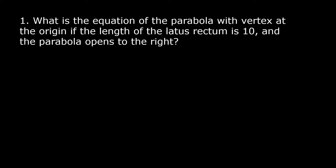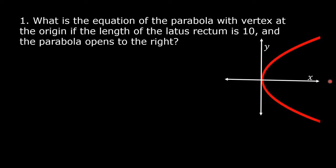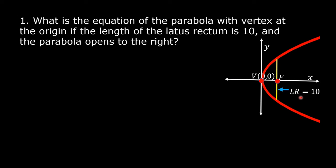Example number 1: What is the equation of the parabola with vertex at the origin if the length of the Latus Rectum is 10 and the parabola opens to the right? Let us say this is the y-axis and this is the x-axis. This is the parabola that opens to the right. The vertex is at the origin with coordinates (0, 0). This is the focus, and this is the Latus Rectum. According to the problem, the length of the Latus Rectum is equal to 10. But we know that the length of the Latus Rectum is equal to the absolute value of 4p.